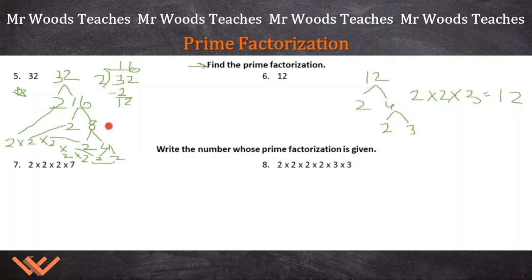Now we have some new directions right here. Write the number. So we're writing something whose prime factorization is given. What we have here is 2 times 2 times 2 times 7. Remember how we did this with the triangle? Let's do the same thing kind of in reverse. 2 times 2 is 4. And then I can say, 2 times 4 is 8. And then I have, I'm going to bring this down here. And 8 times 7 is 56. I'm going to circle this for my answer.